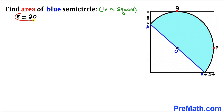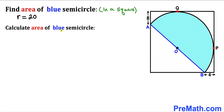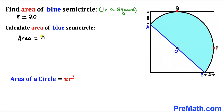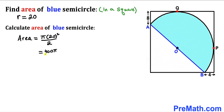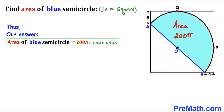Now for our final step: calculating the area of this blue semicircle. Recalling the area of a circle formula, Area = πr², in our case r = 20. The area of this blue semicircle is π × 20² ÷ 2 = 400π ÷ 2 = 200π. So the area of this blue semicircle turns out to be 200π square units. Thanks for watching, and please don't forget to subscribe to my channel for more exciting videos.